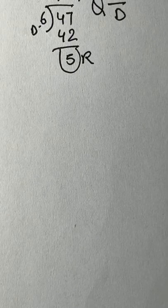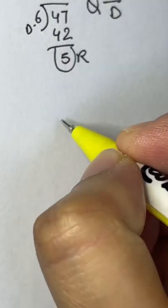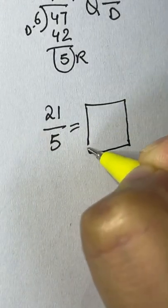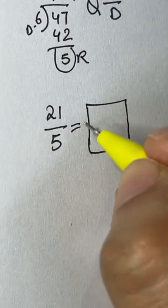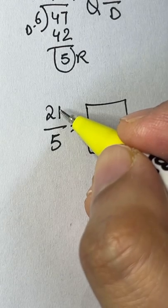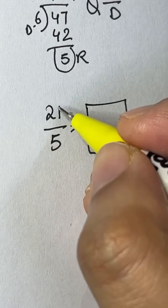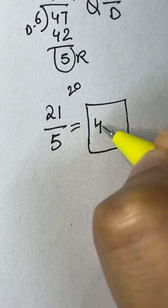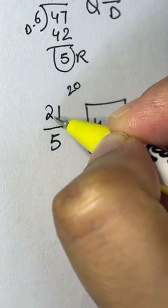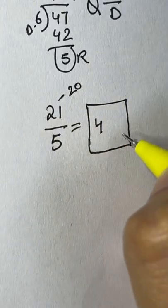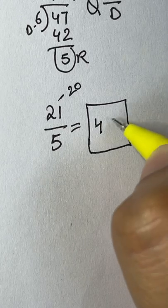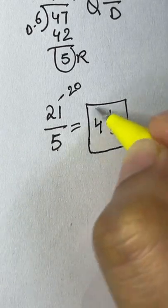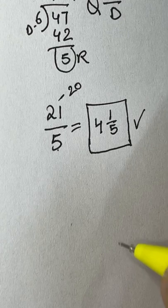For example, 21 over 5. We need to convert it back to a mixed number. In the 5 times table, 5 times 4 gives us 20, which is the closest without exceeding 21. So 4 is our whole number part. The difference is 21 minus 20, which is 1. So the remainder is 1, and the denominator stays as 5.